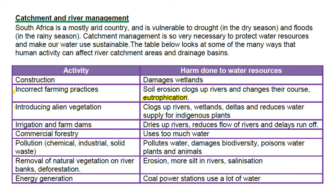Introduction of alien vegetation. Alien vegetation generally uses more water than our indigenous vegetation would, and if it gets into the rivers and dams it clogs them up. One example of that is water hyacinths — a big problem.